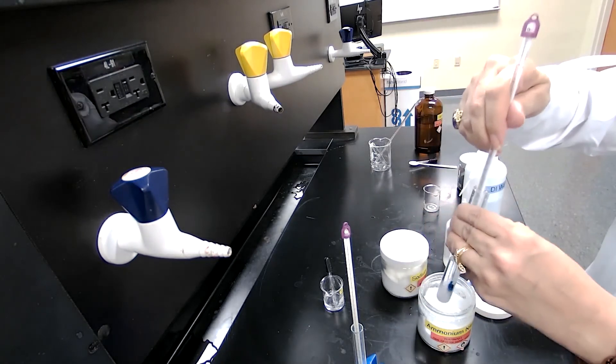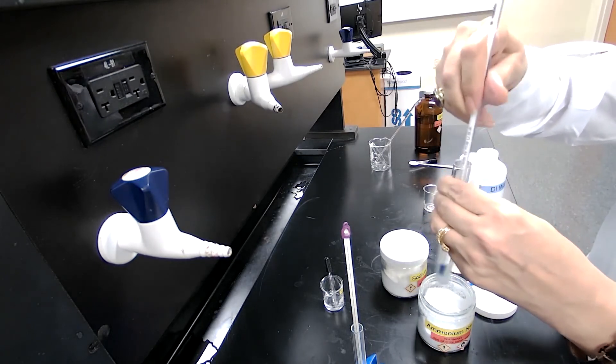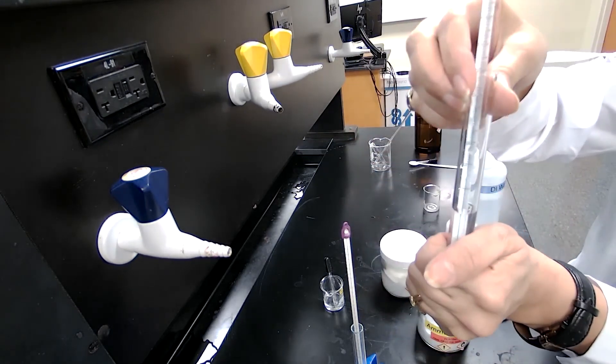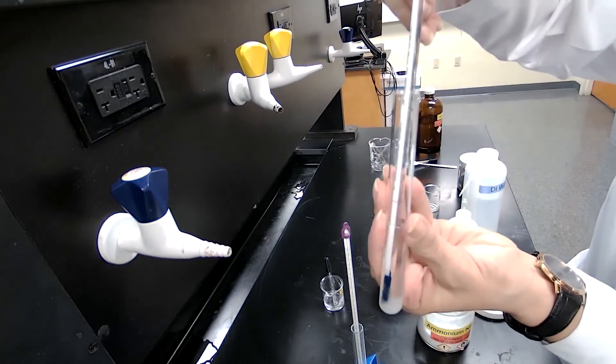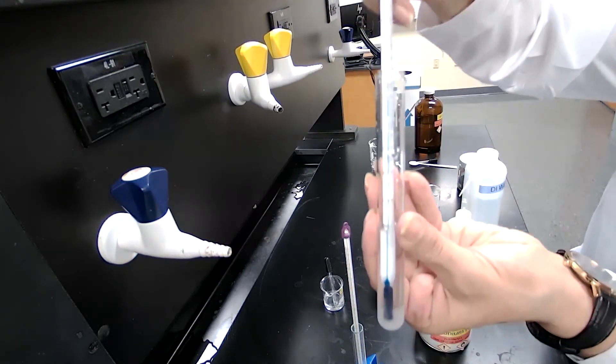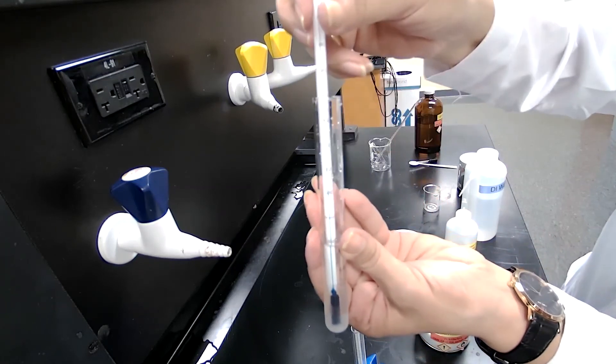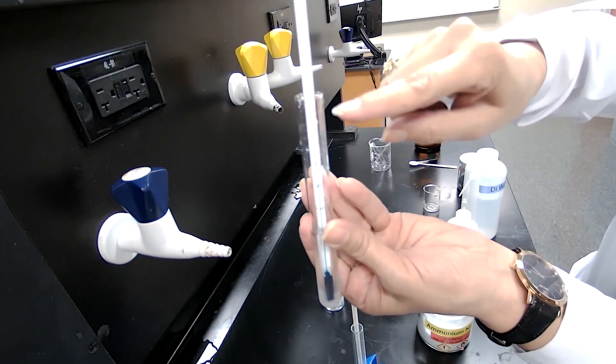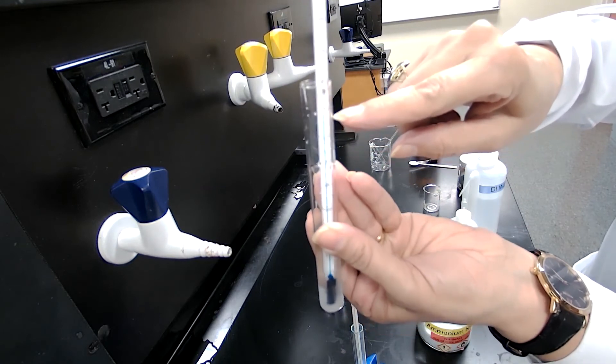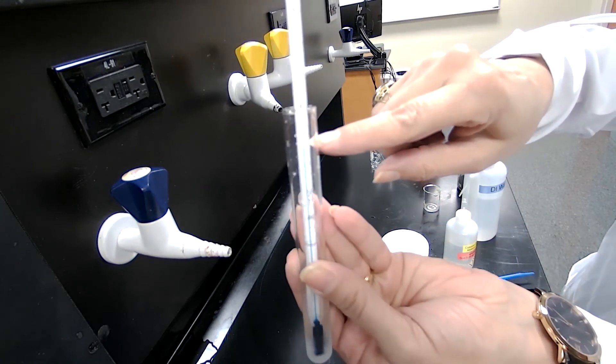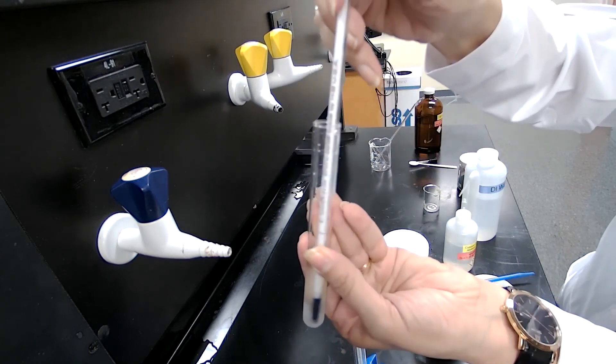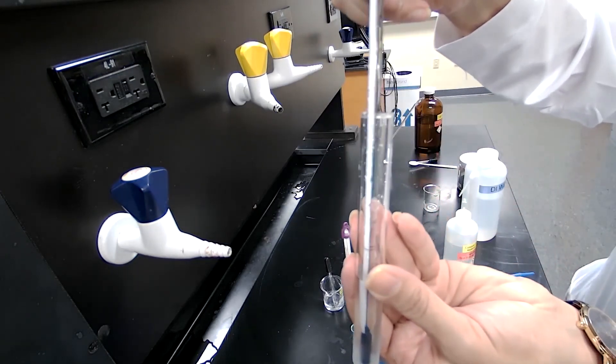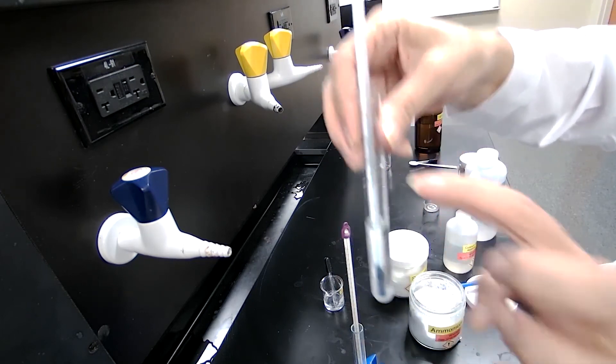The level of the thermometer now was at 22, all the way up here, and now it's down here. For the ammonium nitrate, the temperature went down to 9. For ammonium nitrate, the temperature went down to 9.